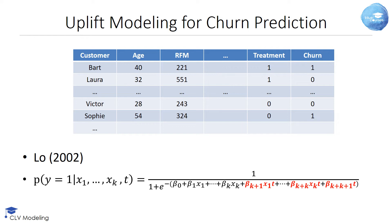Obviously, Lowe's method calls for a variable selection procedure to be applied to reduce the number of variables. The interaction terms explicitly included in Lowe's method allow the model to account for the heterogeneous effect of a treatment based on the characteristics of a customer, as expressed by the predictor variables. For instance, if a treatment significantly decreases churn rates in the customer segment with age less than 30, including the interaction terms allows the logistic regression model to pick up this pattern and more accurately predict uplift. In other words, including these interaction terms increases the power of the approach.